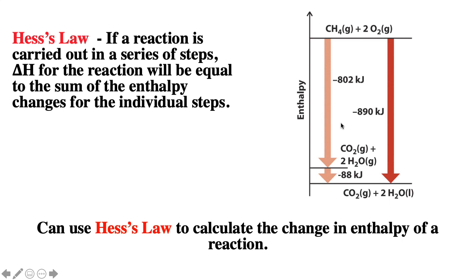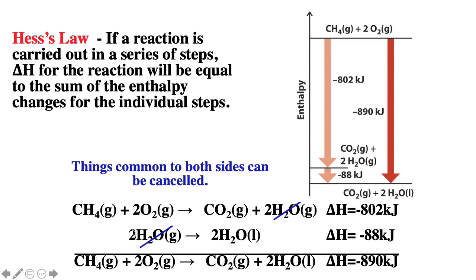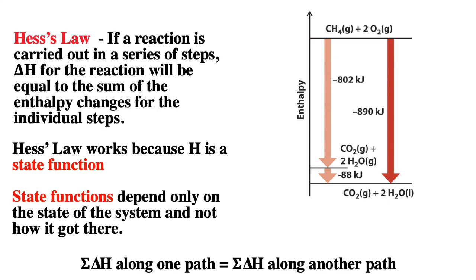Hess's law works because enthalpy is a state function. We can draw this reaction using a plot. Reactions are a lot like mathematical equations — we can flip them, multiply them by a number, and we can even add them. If you flip products and reactants, you change the sign of your delta H. If you multiply the reaction by a number, you have to multiply the corresponding delta H. When we add reactions, we add the corresponding delta H's. Things common on both sides — such as 2H2O gas — cancel, just like in mathematical equations.